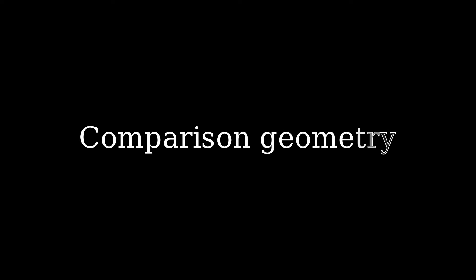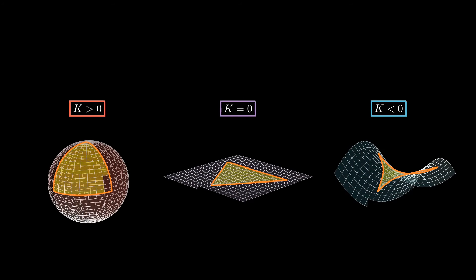Welcome, everyone. This will be the last lesson of our differential geometry course. We will delve a little deeper into comparison geometry. Recall that the Gauss-Bonnet theorem told us that in the presence of positive curvature, triangles are fat, and in the presence of negative curvature, triangles are thin. The main theorem we will learn today is another instance of this phenomenon.